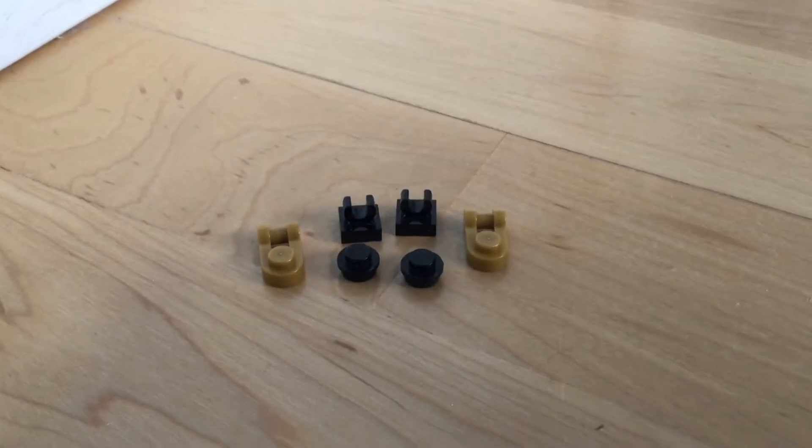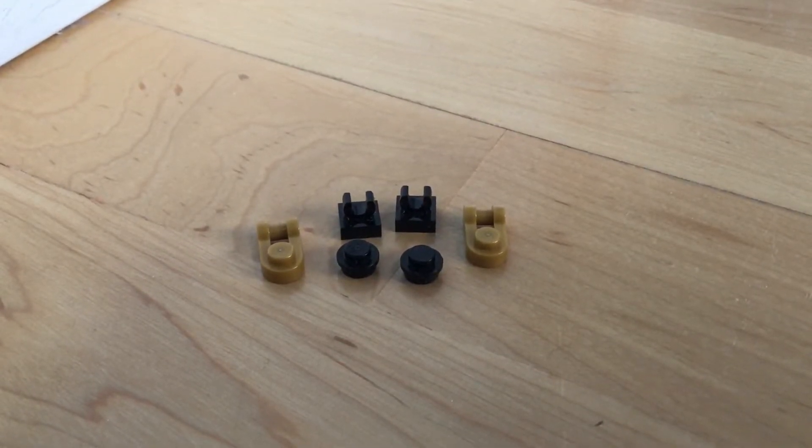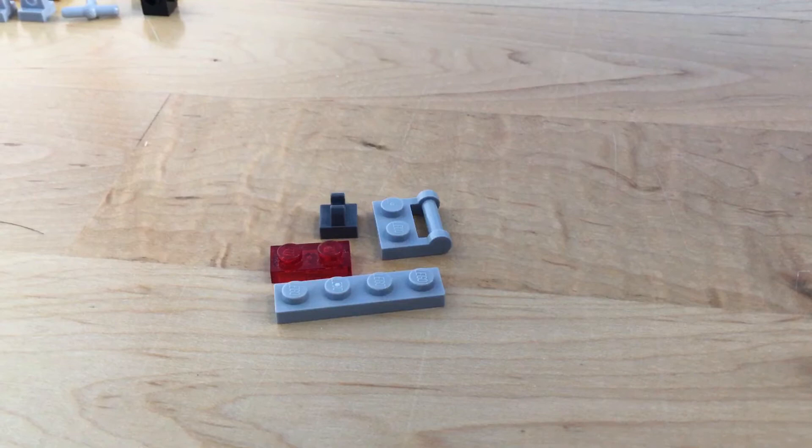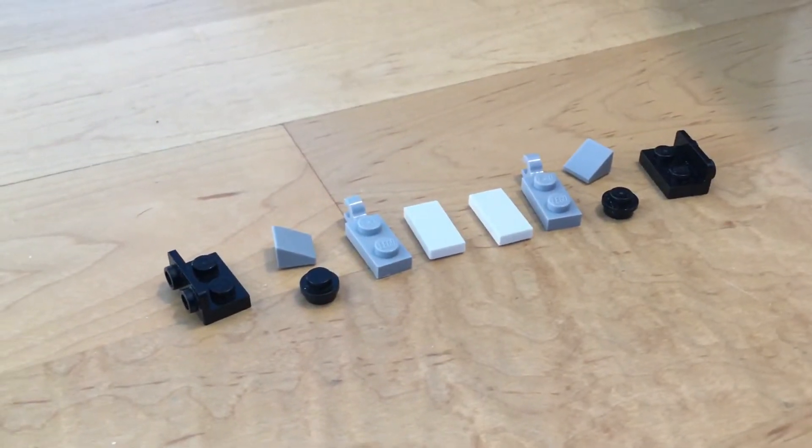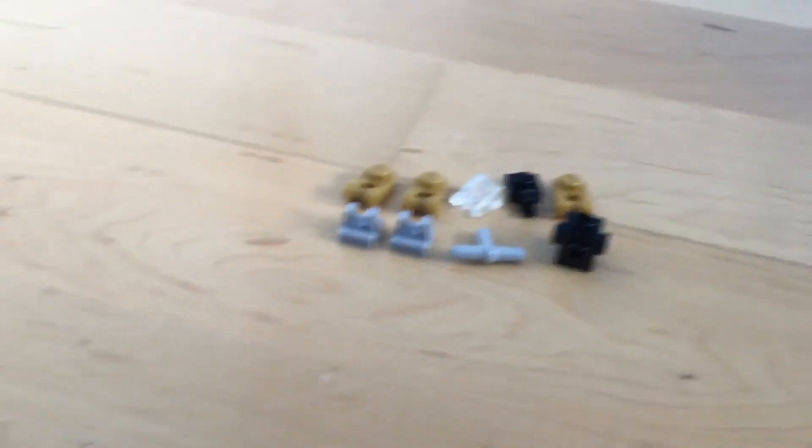So first things first, section one is both of his arms. Pause any time if you need to and collect those pieces. So yeah, this is section one, his arms. Section two is the back spoiler or something. Section three will be his legs. Section four will be the main part of his body.